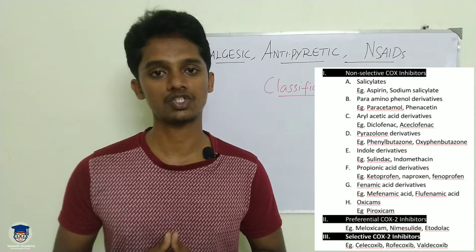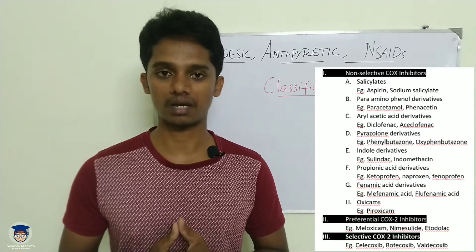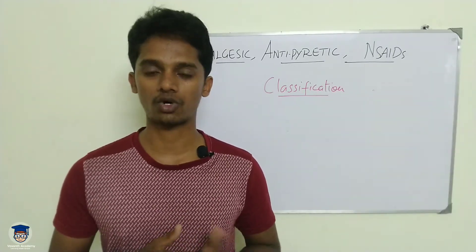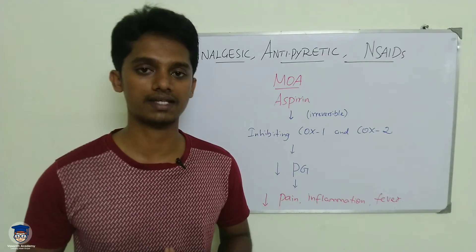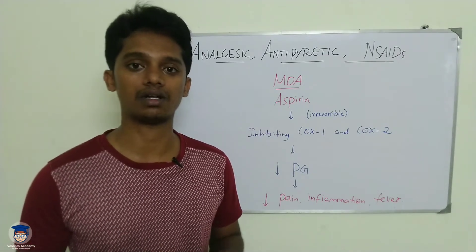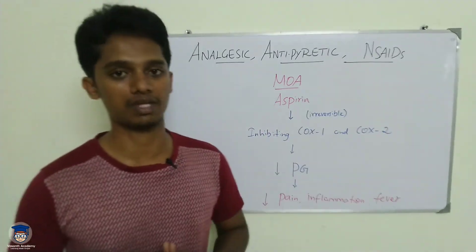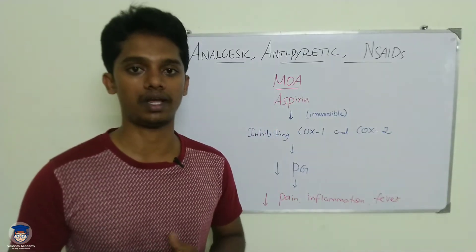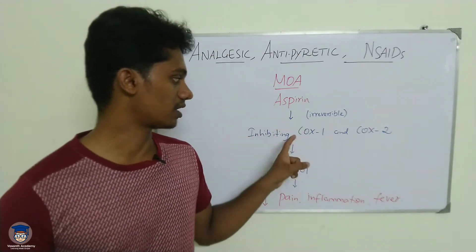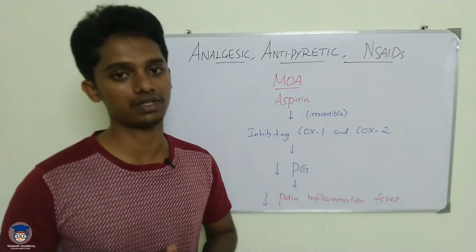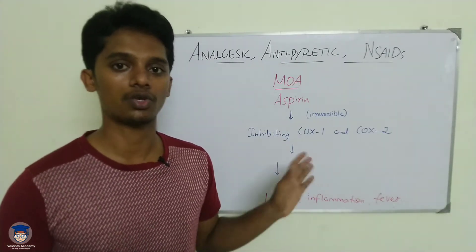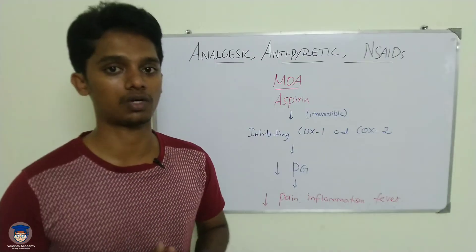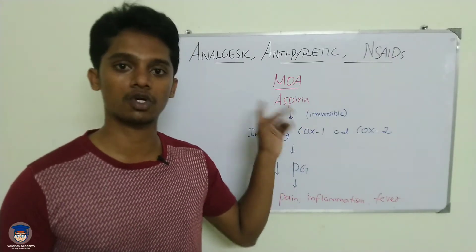The main category of NSAIDs to focus on is the salicylates — for example, aspirin and sodium salicylate. Now let's look at the mechanism of salicylates. Salicylates share a common mechanism with all NSAIDs. However, aspirin is special: it irreversibly inhibits both COX-1 and COX-2 enzymes, meaning the inhibition is not reversed, making its action very long-lasting. Other NSAIDs produce reversible COX inhibition.